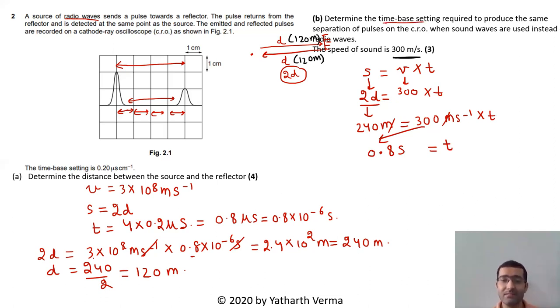Now the question is what is the separation of pulses, meaning what is the time-base setting? Same separation: 4 centimeters apart. Now think about it - if they are 4 centimeters apart for 0.8 seconds, then 4 centimeters is 0.8 seconds because of the different speed. So 1 centimeter represents how much? 0.8 by 4 which is 0.2 seconds. So what we need is 0.2 seconds per centimeter - this time-base setting is needed.